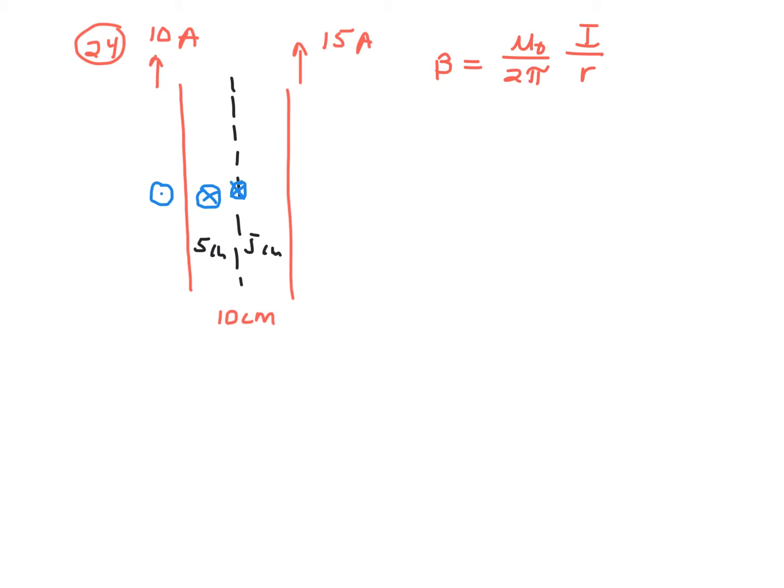The same is true of the wire on the right, the 15-amp wire — I'll use black. On the right-hand side of that wire the field goes into the paper, circles around, and comes back out of the paper on the left side. Further out to the left it's coming out of the paper. These two fields then interact. Along that midline in the plane of this paper, the wire on the right has a magnetic field tangentially towards the ceiling and the wire on the left has one towards the floor. It will be easy to add those two vectors — they're diametrically opposed, so all we need to do is subtract those two values.